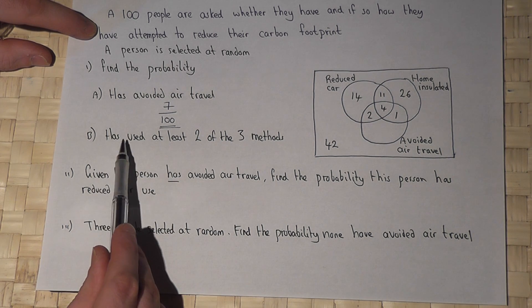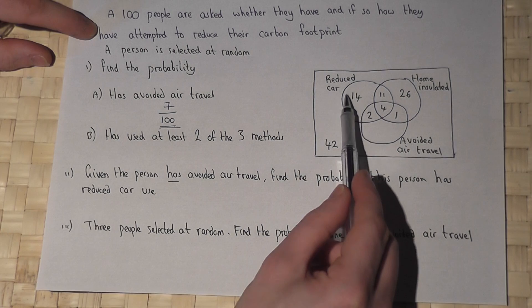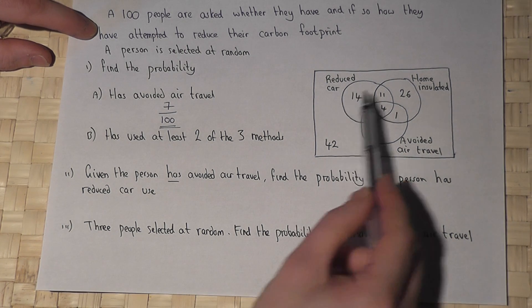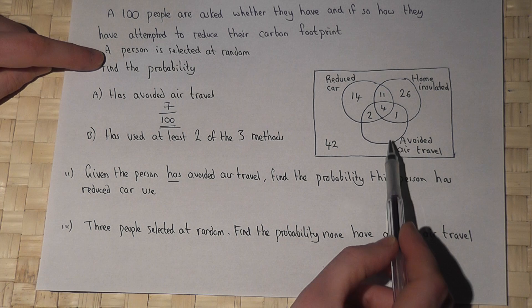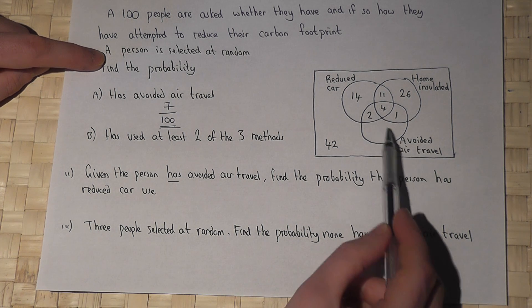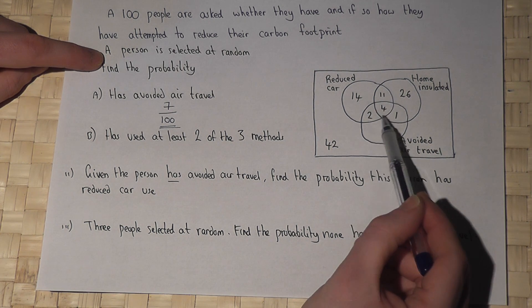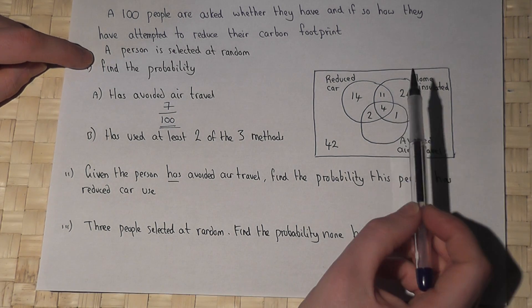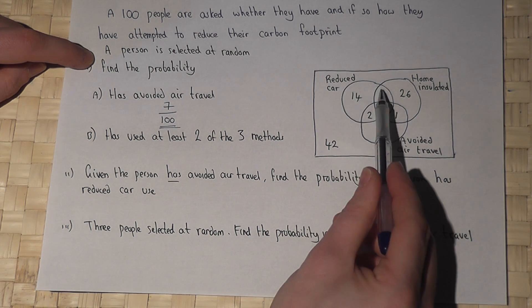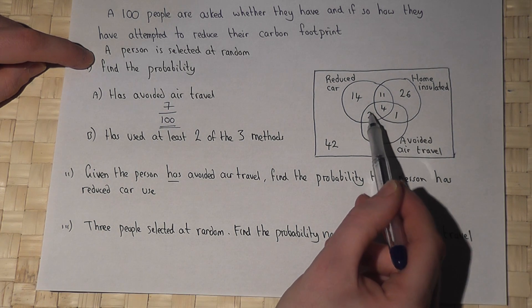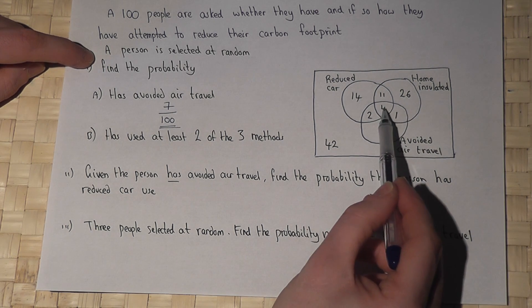Part B says has used at least two of the three methods. Now this number here is just reduced car, this is just home insulated, and this here is to avoid air travel. There was no person in there, hence the lack of the number. But these inner ones here represent two or more ways in which they tried to reduce their carbon footprint. So 11 people both reduced their car use and had their home insulated, two reduced car and avoid air travel, one insulation and avoid air travel. Those four were all three.